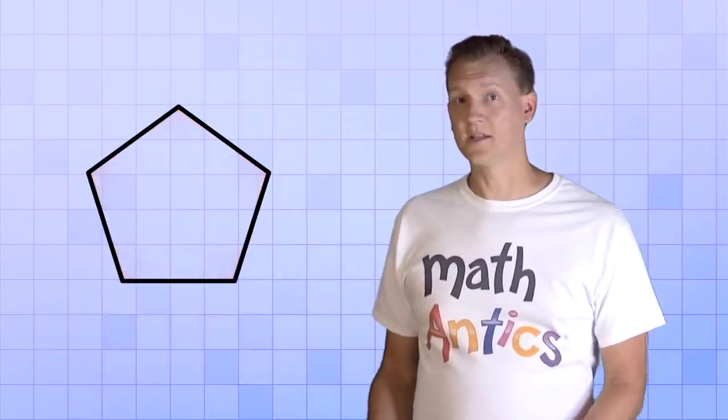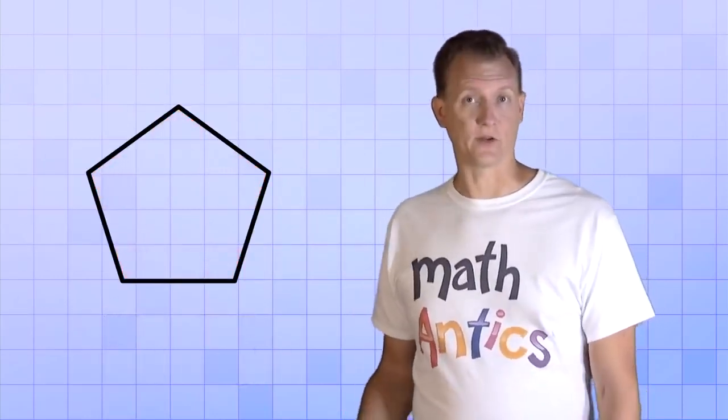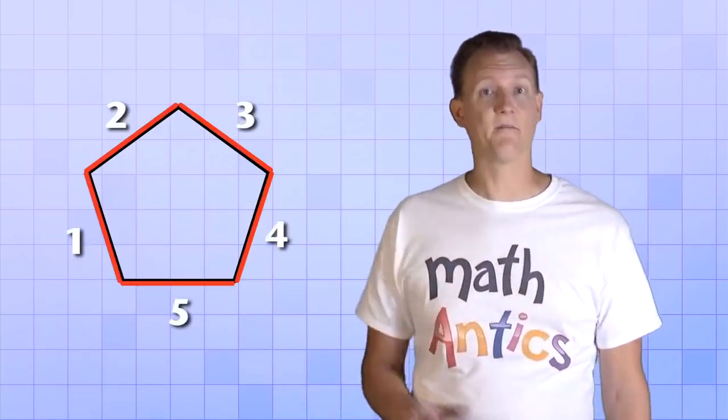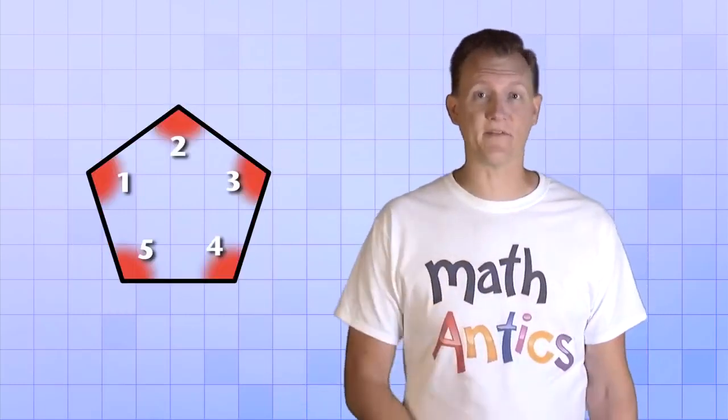So all polygons have sides, vertices, and angles. This polygon here has five sides, five vertices, and it forms five angles.